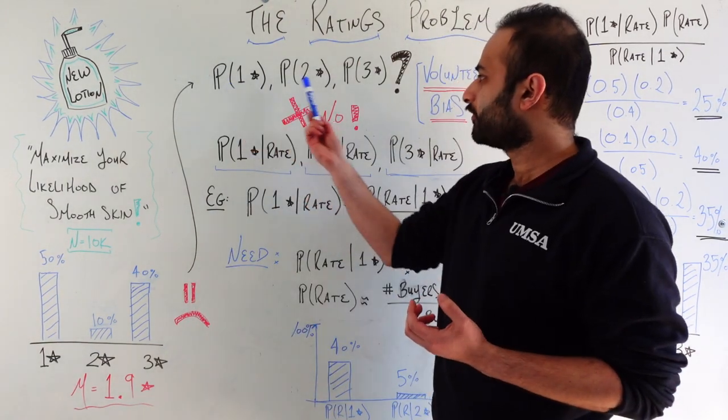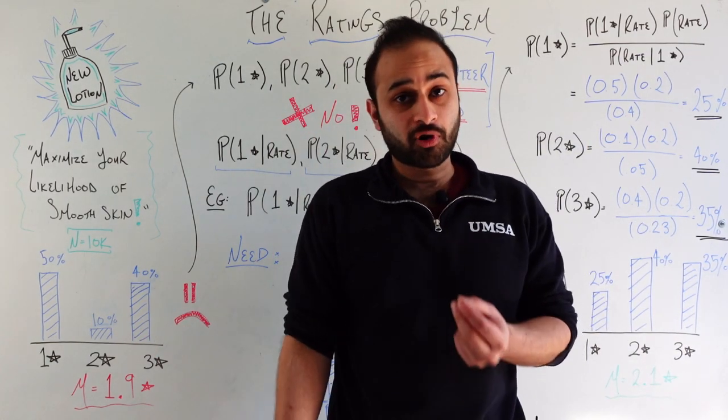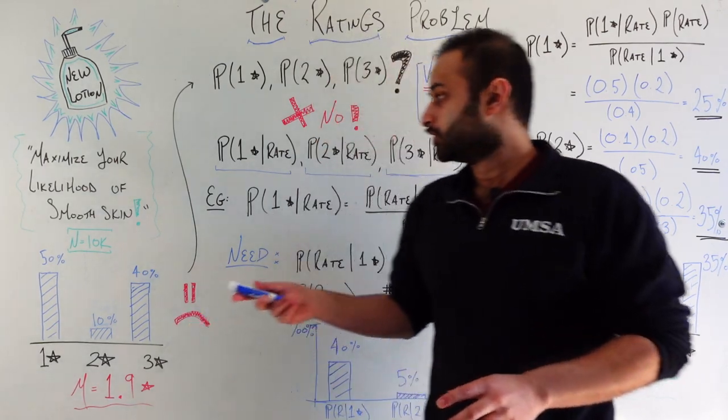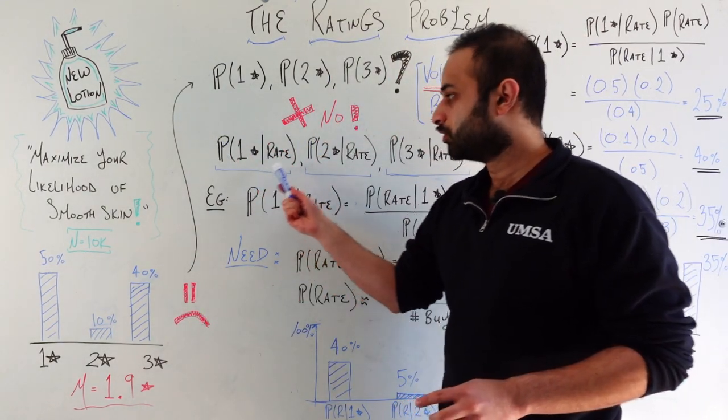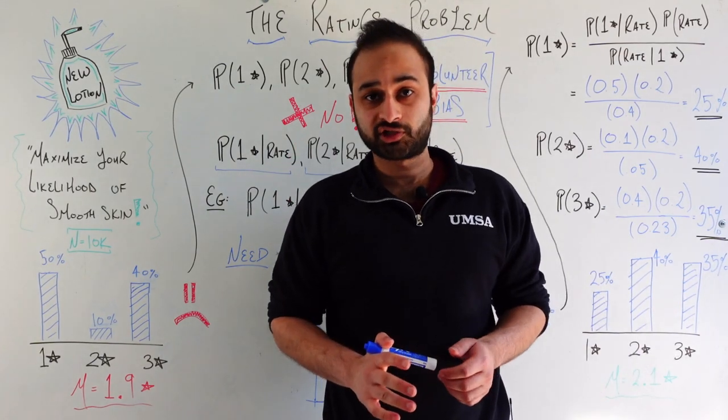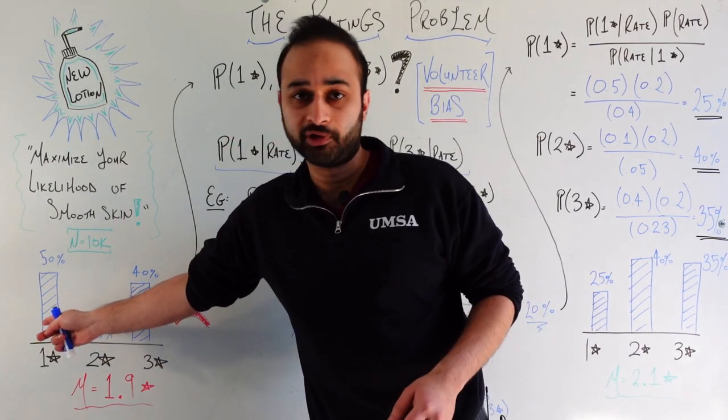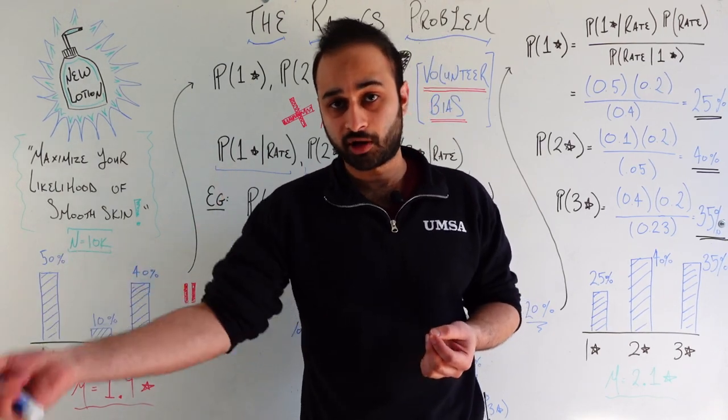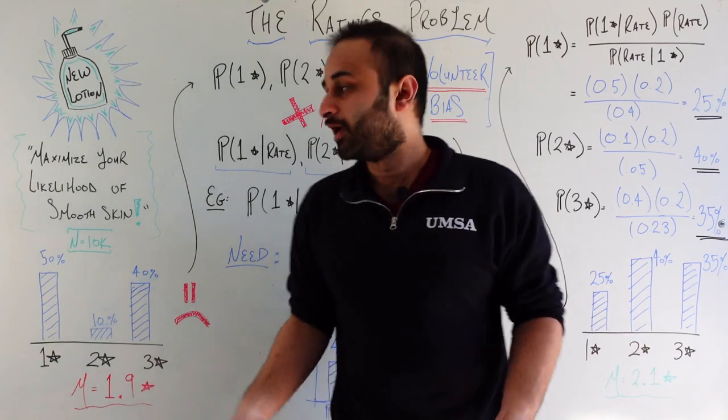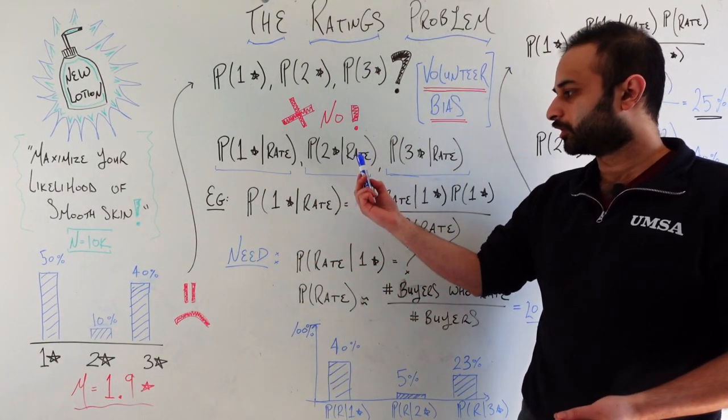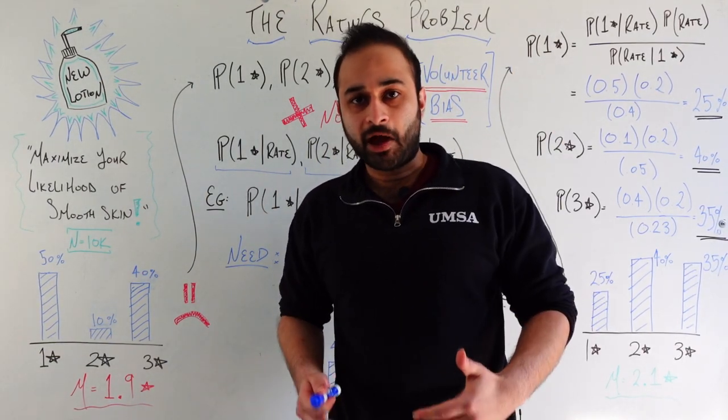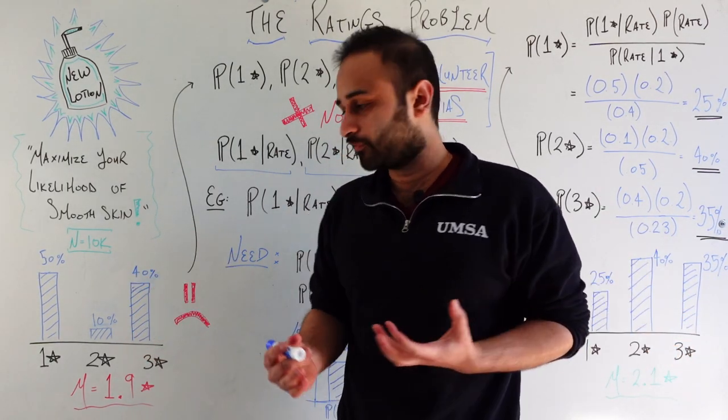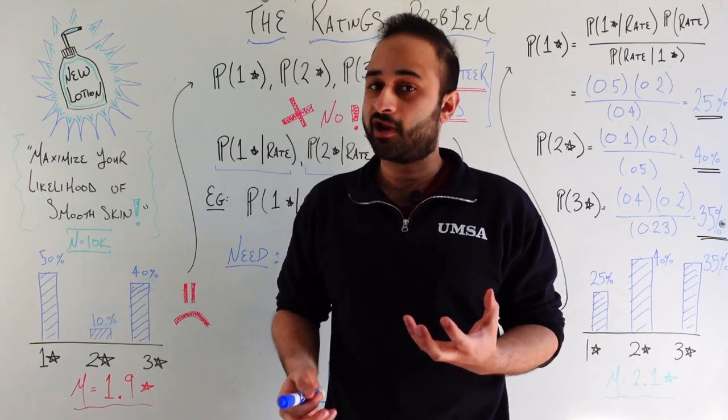So as we said, these are not the probabilities that we're looking at here. The actual probabilities you're looking at here are somewhat related but fundamentally different. You're looking at the probability that someone gives you a one star given that they choose to rate your product. So this is actually a conditional probability, conditional on the event that someone decides to rate your product, which is a very big distinction to make. And now in order to come back to this problem about can we use this data and somehow unbias it to get a better description of the true ratings, let's fall back on our good friend Bayes theorem.